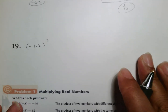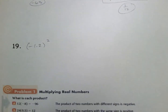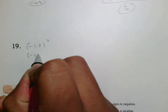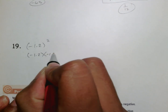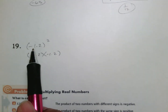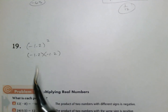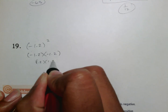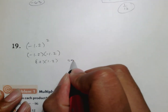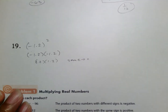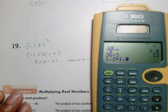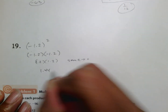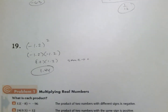The next number we're going to look at is number 19. Number 19 has negative 1.2 squared. We have to remember that squared means take whatever's here and multiply it by itself, which makes negative 1.2 times negative 1.2. What makes this tricky is that most people think it's negative something. But you have to remember: even though we are doing 1.2 times 1.2, the signs are the same, and that makes it a positive answer. So 1.2 times 1.2 is 1.44, and because it's positive, that's your answer.